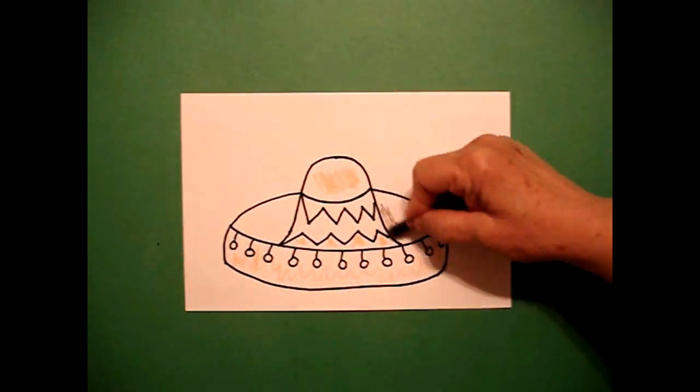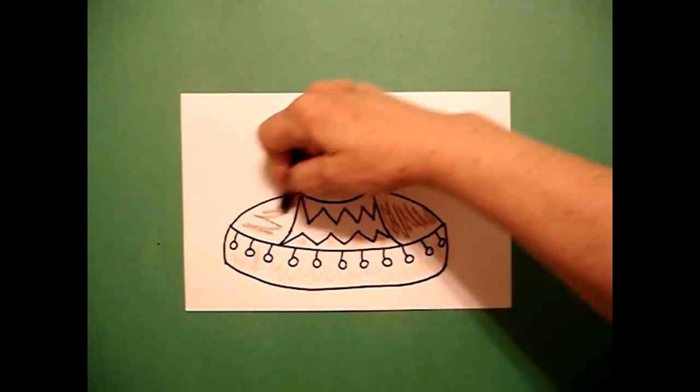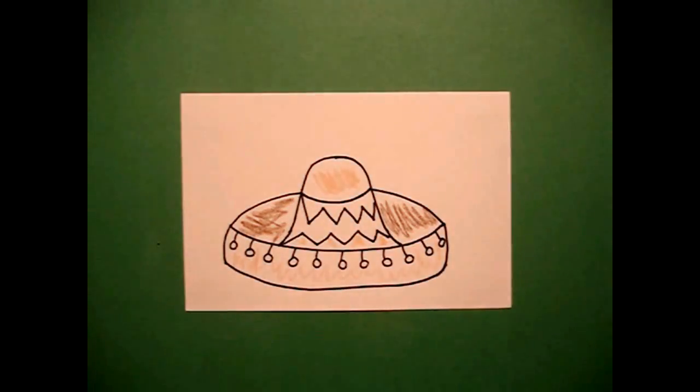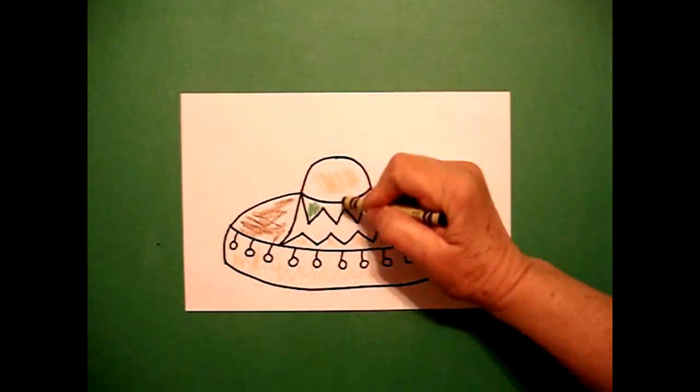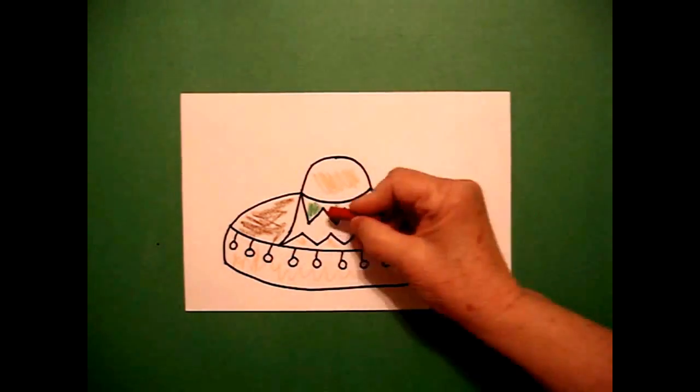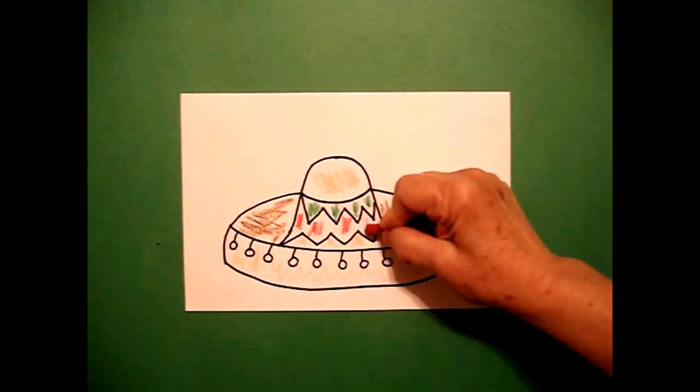Now, for this section, I'm going to color this section darker brown for the inside. I'm going to come back into my zig-zag. The top part, I'm going to color green. And the band, I'm going to color red. Those are the Mexican colors, flags.